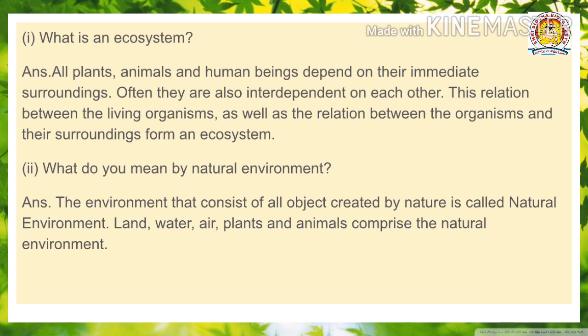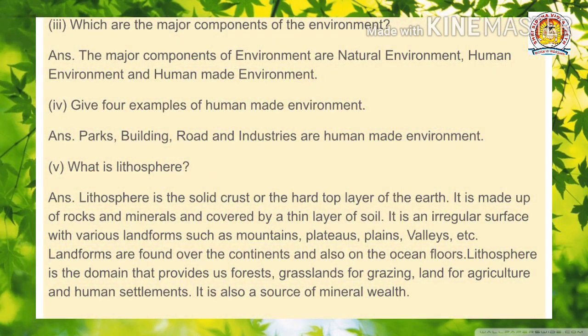What do you mean by natural environment? The environment that consists of all objects created by nature is called the natural environment. Land, air, plants and animals comprise the natural environment.